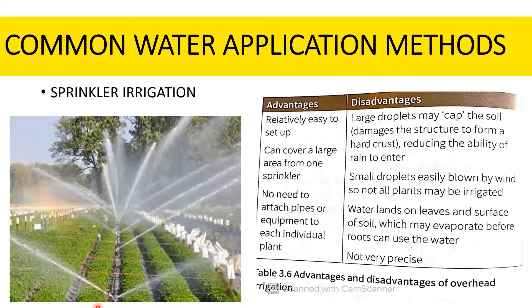The disadvantages of sprinkler irrigation are: the initial cost is high; the water must be clean and free of sand, debris and dissolved salts; it cannot be used in windy climates; and when water lands on leaves and soil it evaporates very quickly.